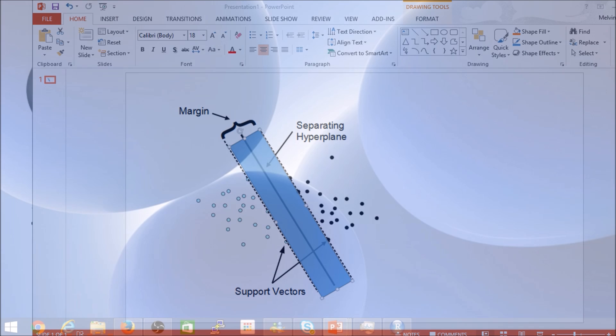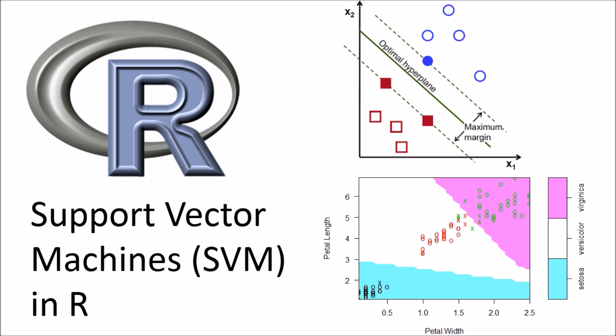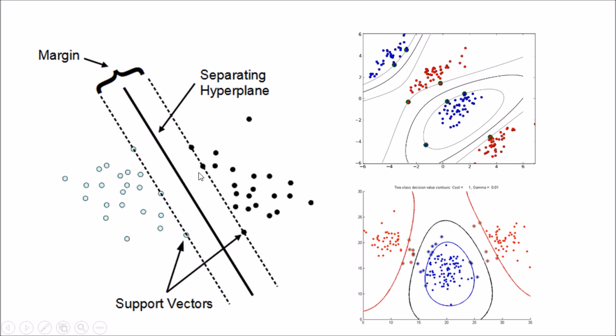We can extend this idea of the hyperplane beyond linear scenarios. SVM can be very efficient for nonlinear classifications as well. SVM handles nonlinear classification using what's referred to as the kernel trick, which uses different implicit mappings and takes higher-dimensional feature spaces to arrive at the classification boundary.